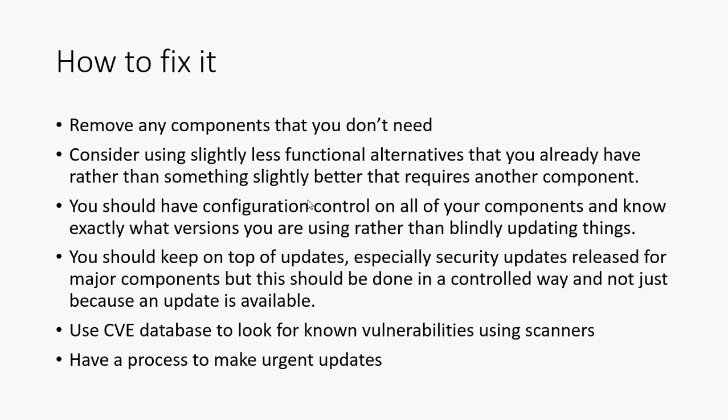Something many larger companies fail on: you absolutely must have a process to make urgent updates to your system. If Apache has a massive vulnerability, you can't wait six months for your normal software release process. You need the ability to say this is an urgent fix against the current code base — deploy it immediately, in parallel with normal development — without bundling in a load of other defect fixes that risk breaking other things. This urgent update capability must be part of your software management and change control process.